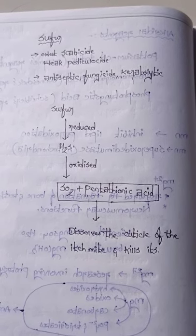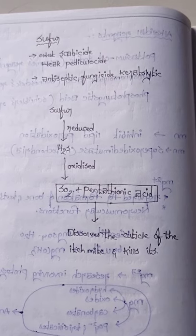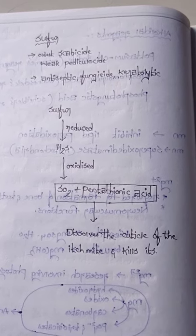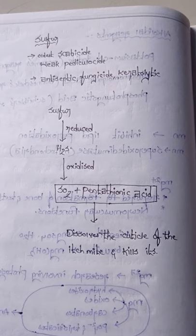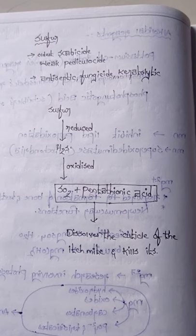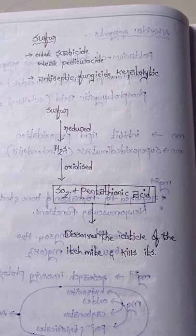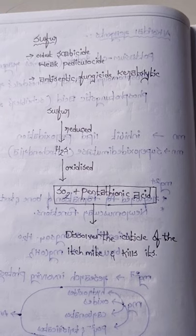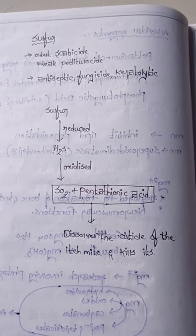Mechanism of action: when sulfur is applied on the skin, it is reduced to hydrogen sulfide. The hydrogen sulfide is then oxidized to sulfur dioxide and pentathionic acid. These sulfur dioxide and pentathionic acid dissolve the cuticle...